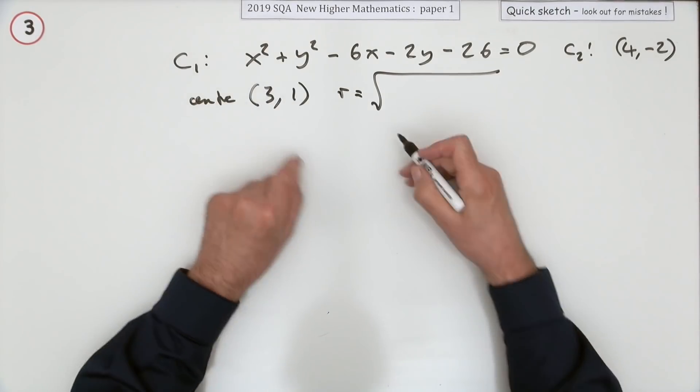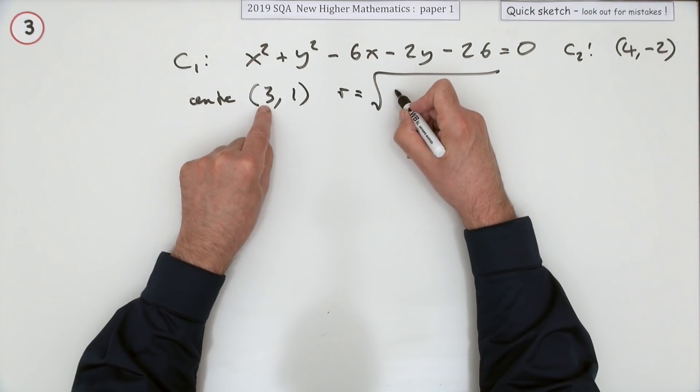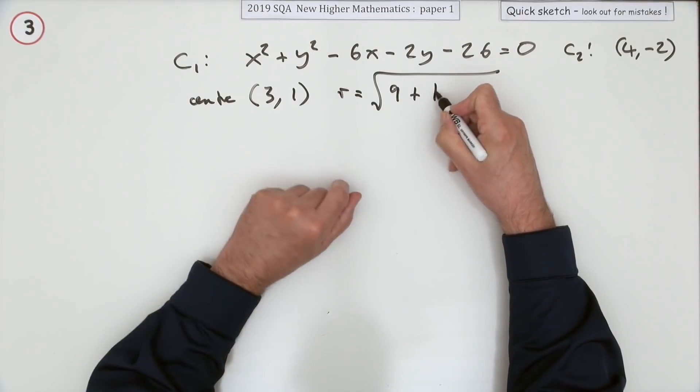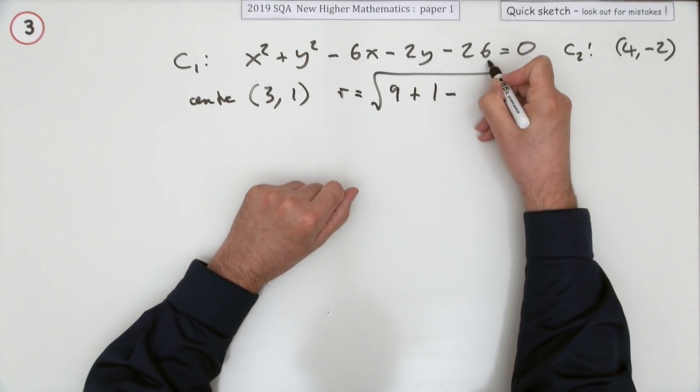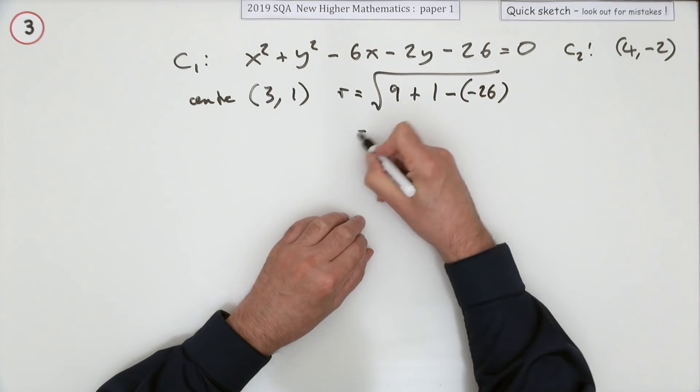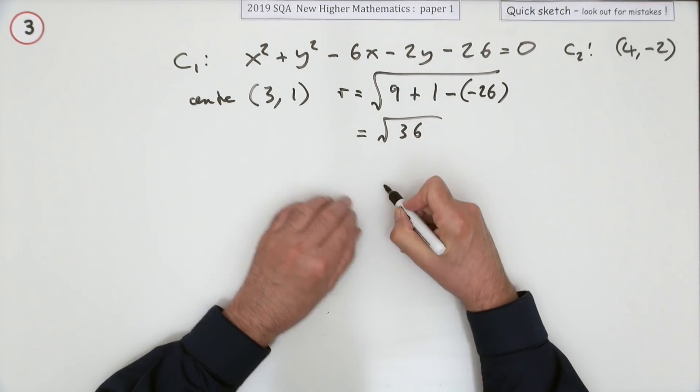The centre squared would be 3 squared, I'm just going to put the answer down, 9 plus 1 squared, 1, minus the number at the end, which I know is plus 26. Now that's 10 and 26 is 36.